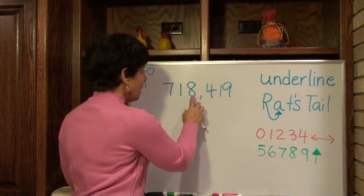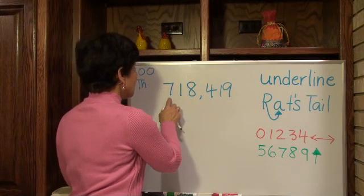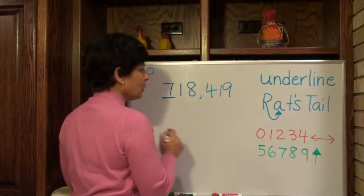Ones, tens, hundreds, thousand, ten thousand, hundred thousand. There we are. I underlined it.